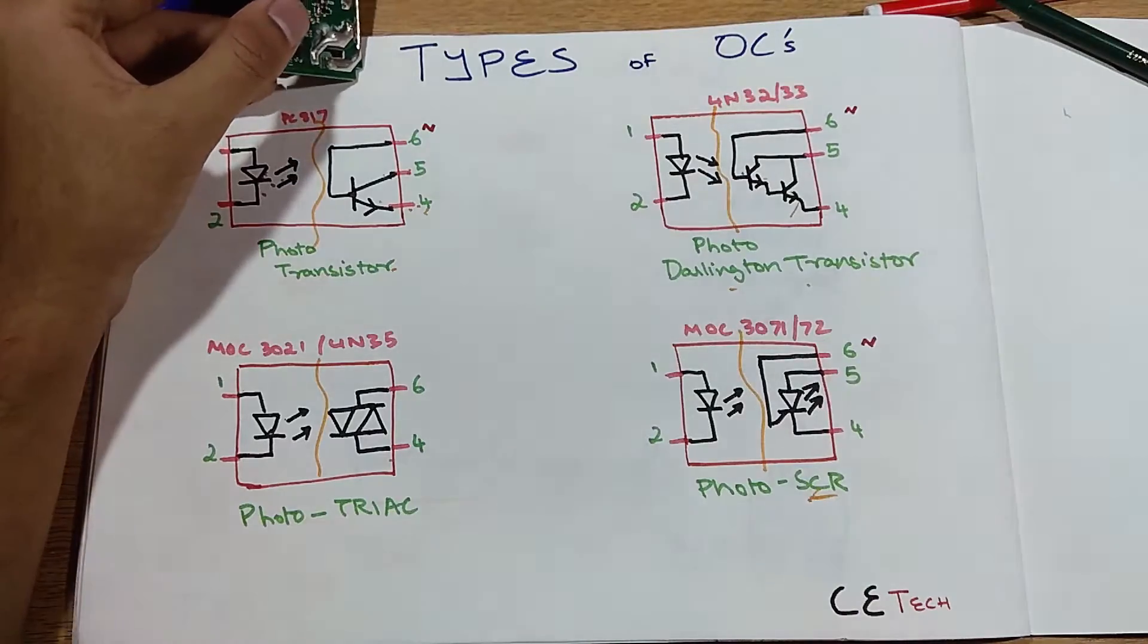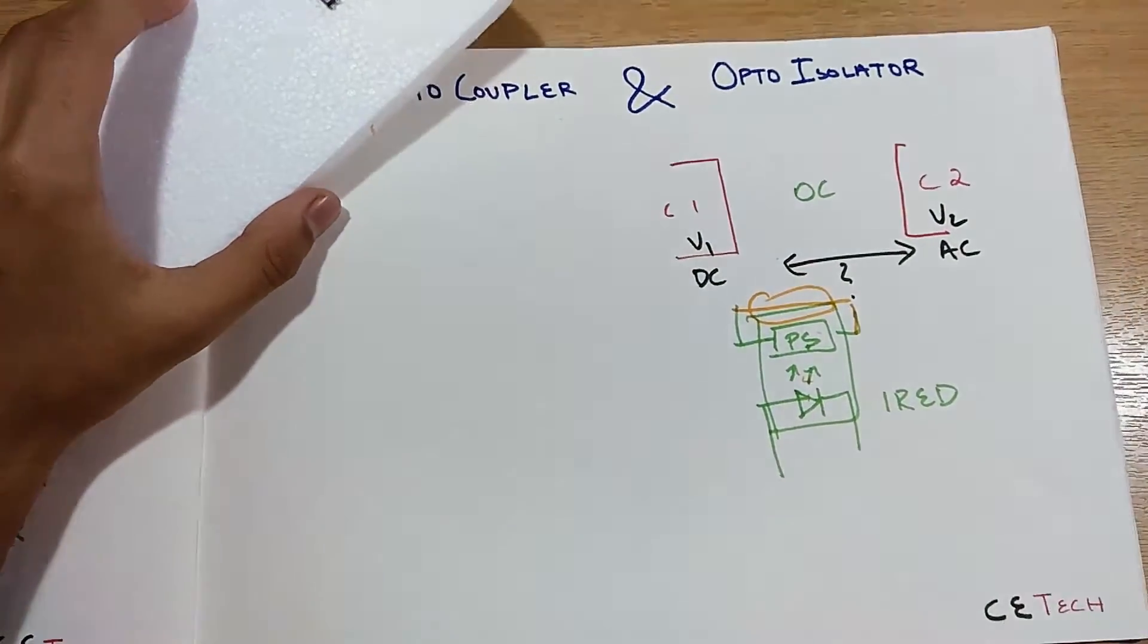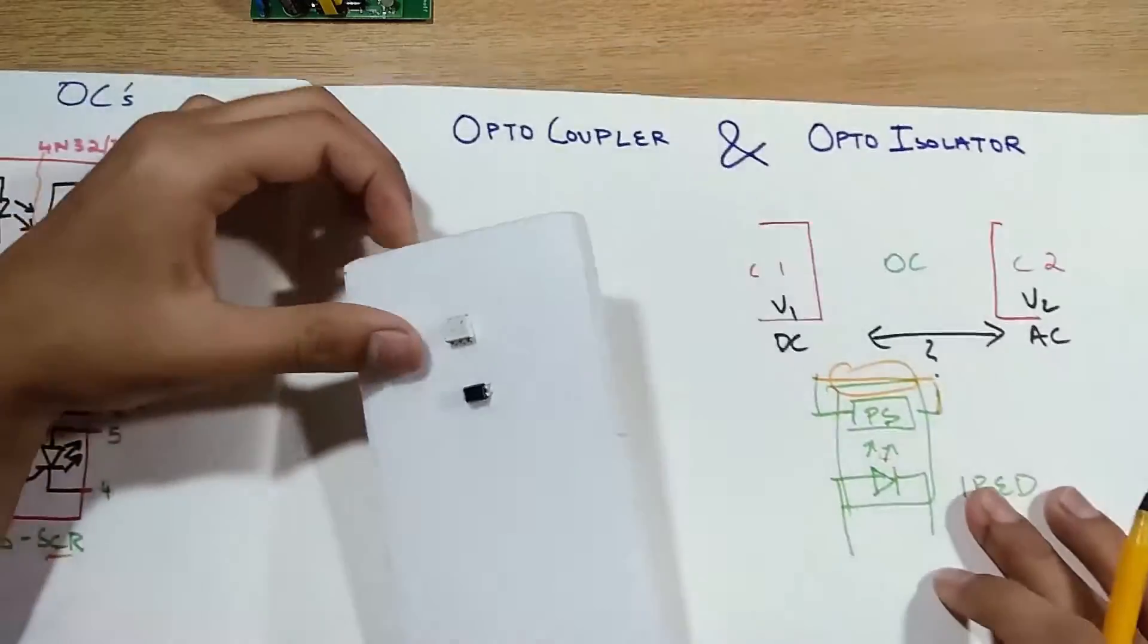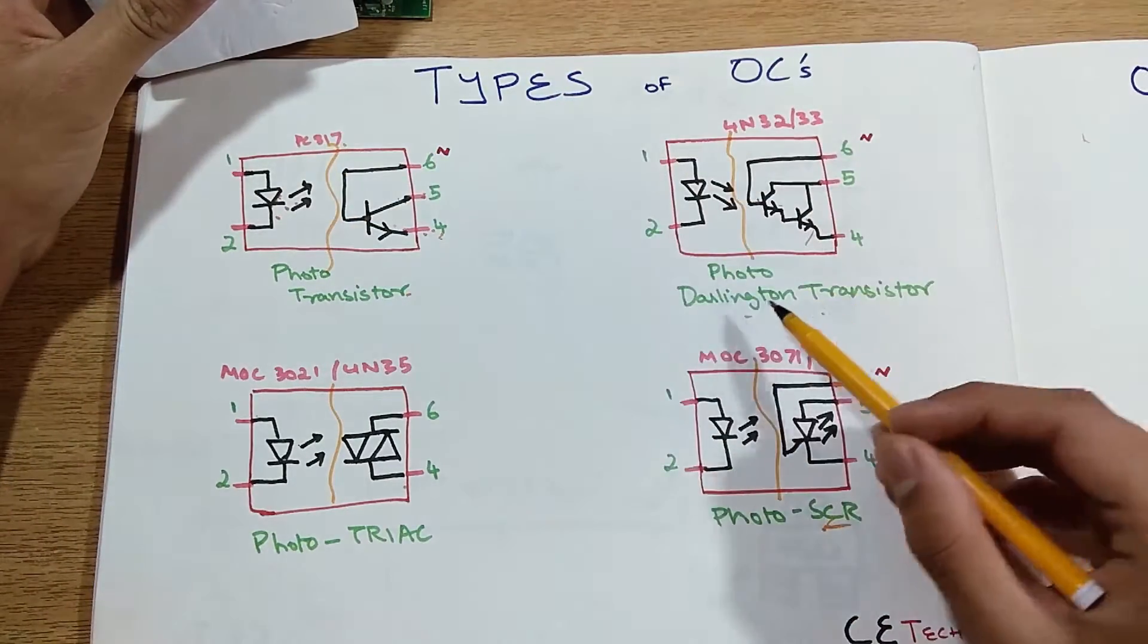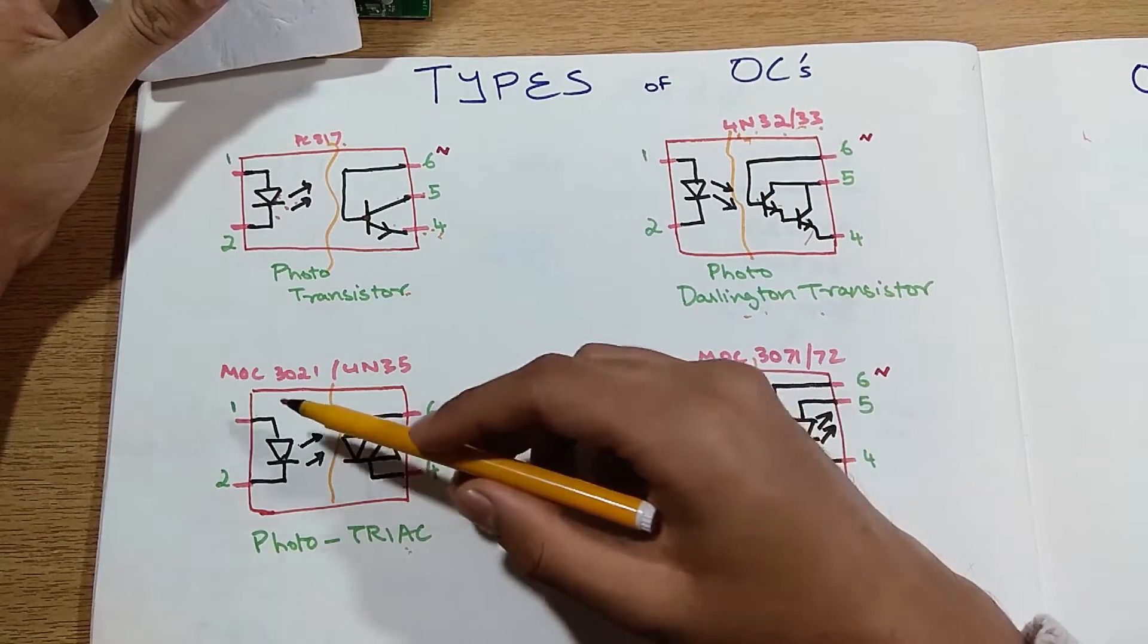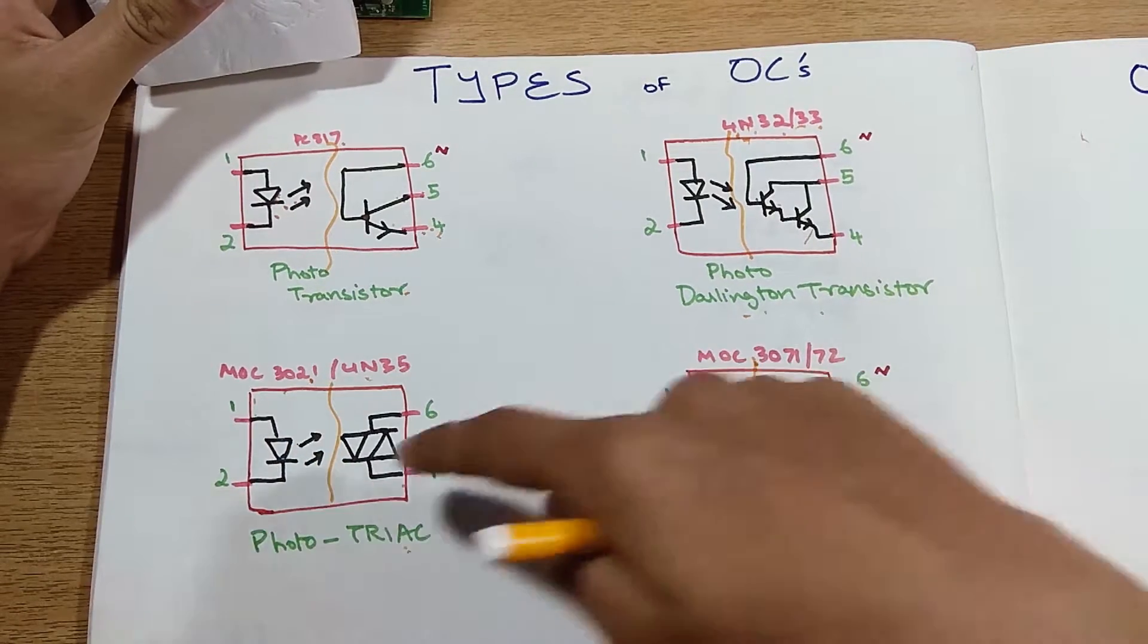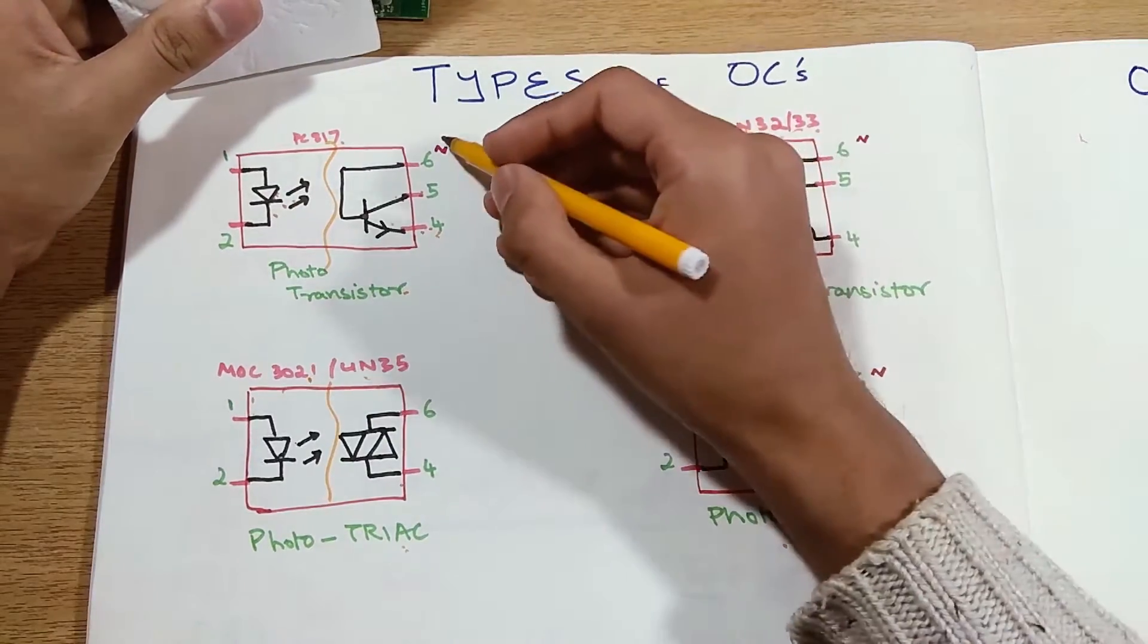So these are the types of the optocouplers that are basically majorly used. Now coming back to the normal use case scenario of the optocouplers, I pulled out these two optocouplers from my hoard of components. This one is the MOC3021 which is a photo triac type and this is the PC817. Switching back to the types of the optocouplers, I'll tell you the major use parts. The photo transistor is the PC817, photo darlington are parts number 4N32 or 4N33. For the photo triac one, MOC3021 or UN35. For the photo SCR one, there's MOC3071 or 3072. MOC is the family for AC optocouplers and 4N is for the DC optocouplers and also PC is for DC optocouplers.